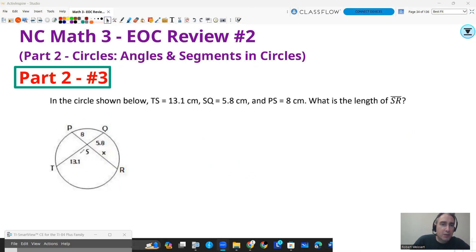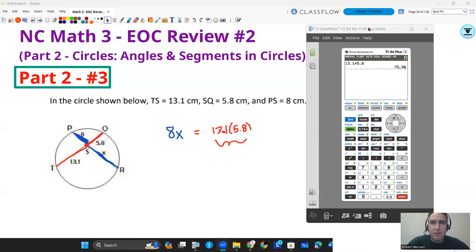A circle is shown. We have TS is 13.1. It's already marked on here. SQ is 5.8. That's going to be over here. And we also have PS is 8, and we want to know what is SR. So notice that I have the two blue ones. Those are actually going to get multiplied together. So we'll just say 8X. Those get multiplied. And then the other two will get multiplied together as well. So equals 13.1 times 5.8. That relationship will always be true with intercepting chords in a circle. Now, I'll need my calculator for this. I'm going to get 75.98.